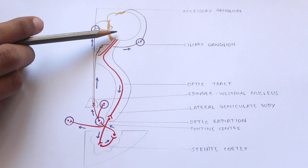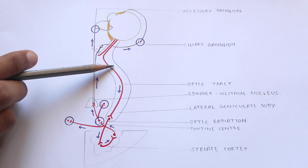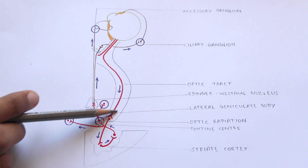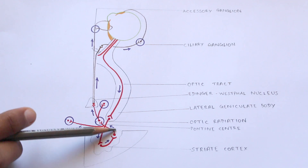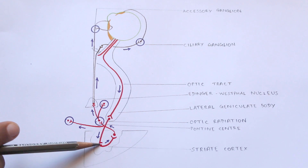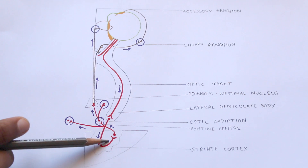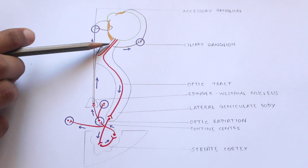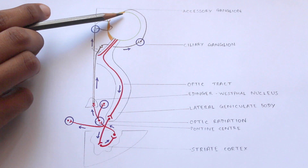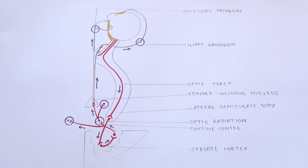The accommodation reflex is pretty similar to the light reflex. It starts off passing through the optic nerve, passes through the optic chiasma and the optic tract to reach the lateral geniculate body. From the lateral geniculate body, fibers pass to the visual cortex. Fibers from the visual cortex lead to the Edinger-Westphal nucleus, from which fibers follow the same pathway as the light reflex. Importantly, the pre-tectal nucleus is not a part of the accommodation reflex.